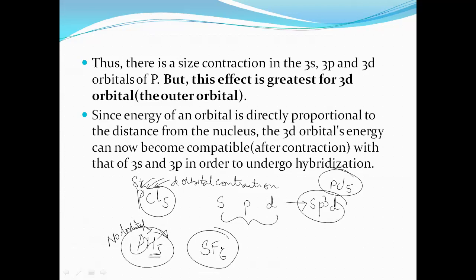In the same way, the existence of SF6 can be explained. The six highly electronegative fluorine atoms around sulfur draw electron density towards themselves, developing a partial positive charge on sulfur. This causes d-orbital contraction, resulting in sp3d2 hybridization, which explains the formation of SF6.